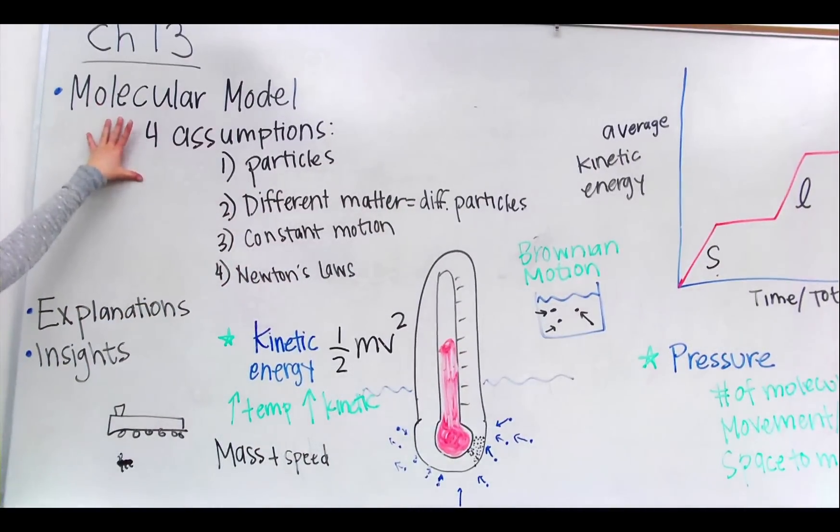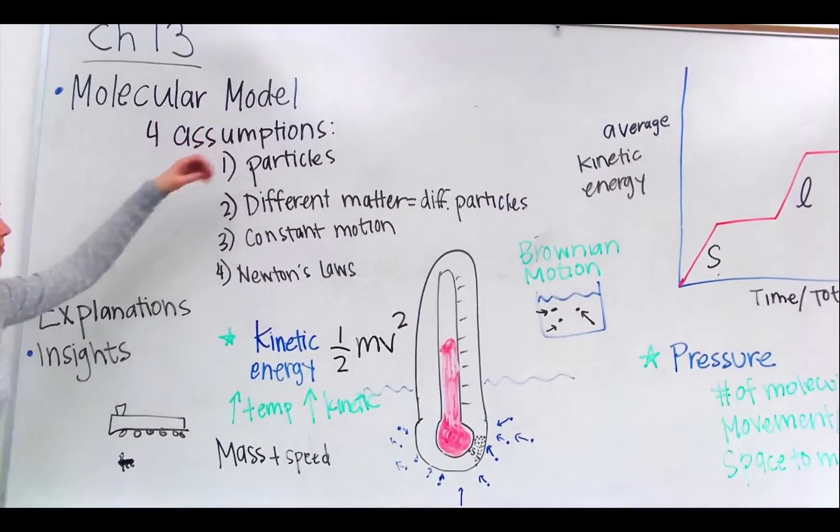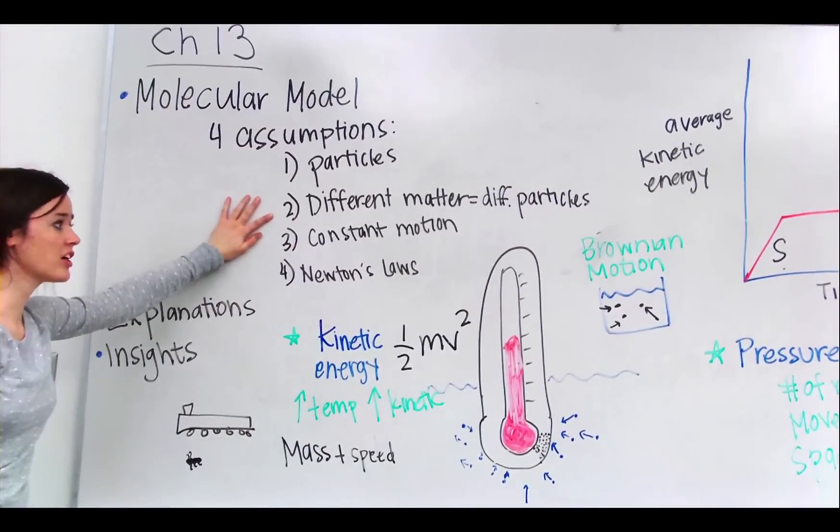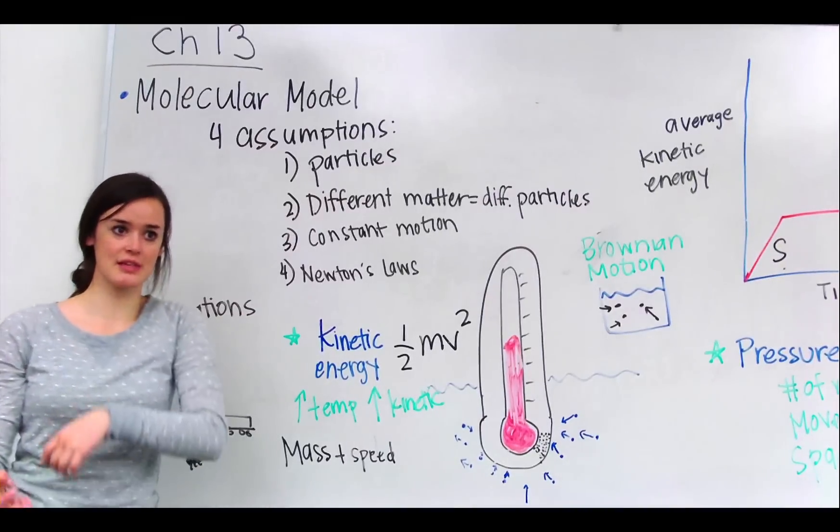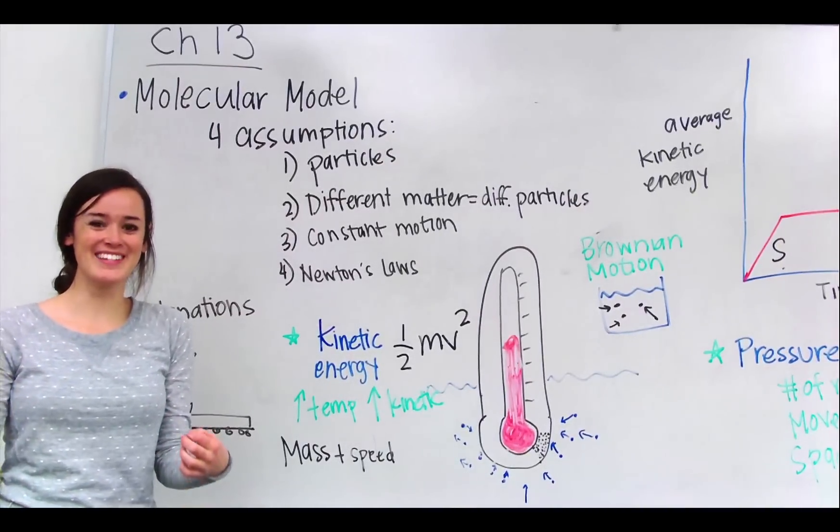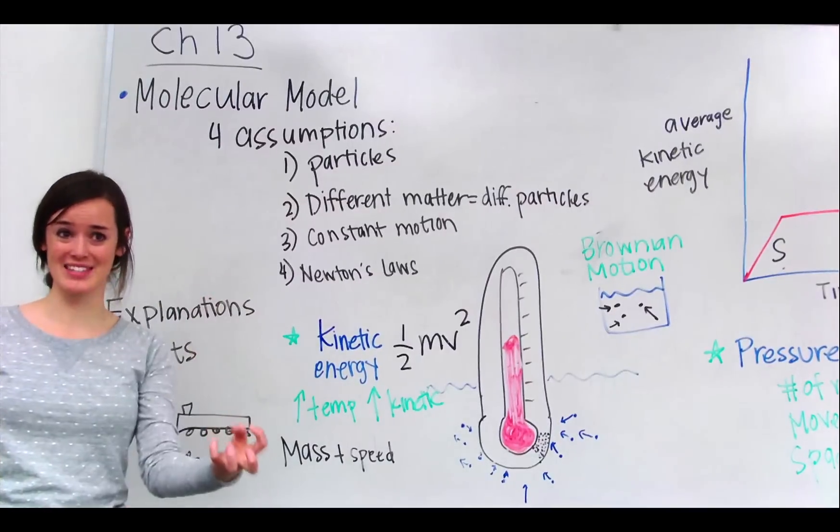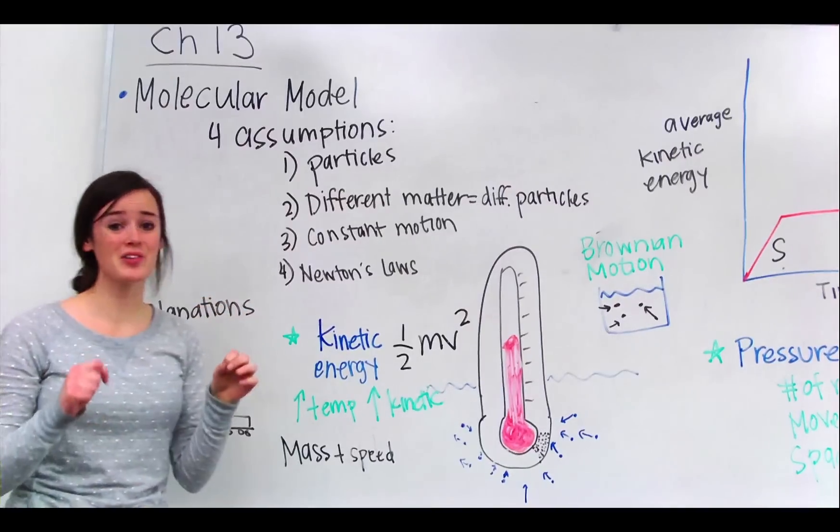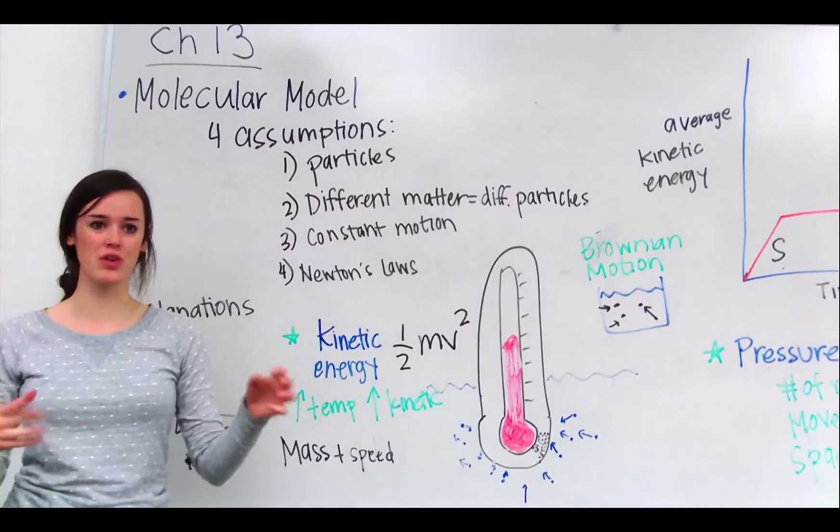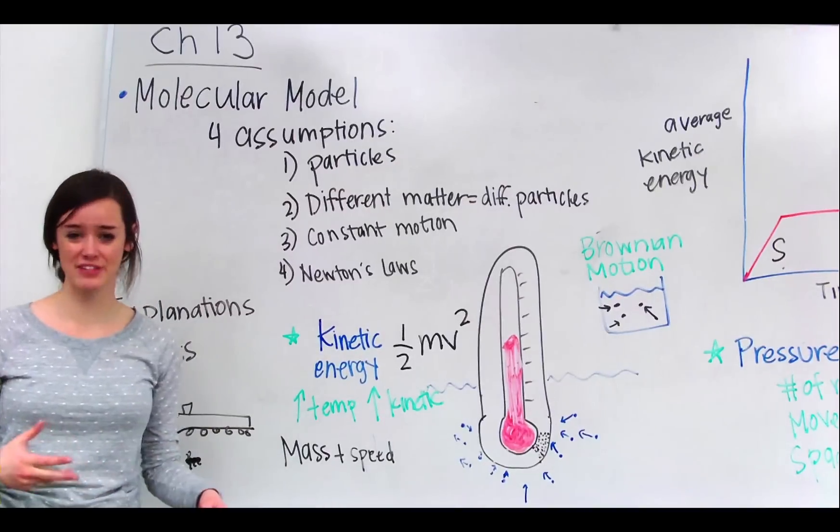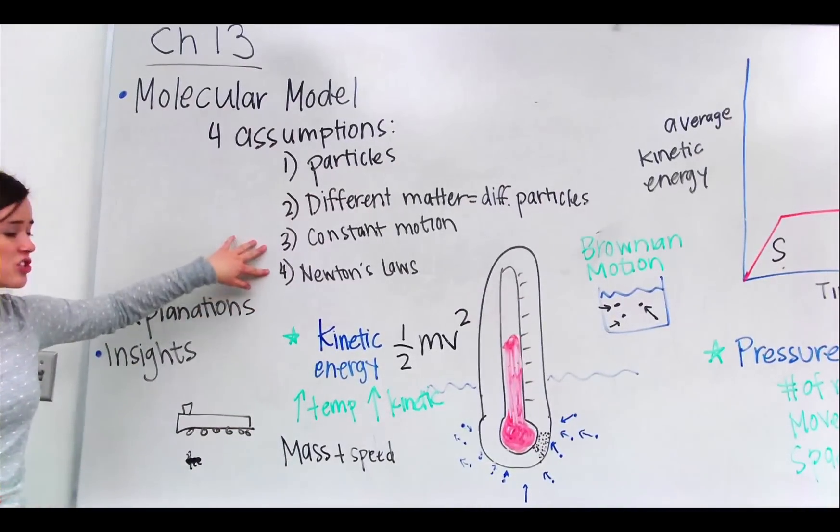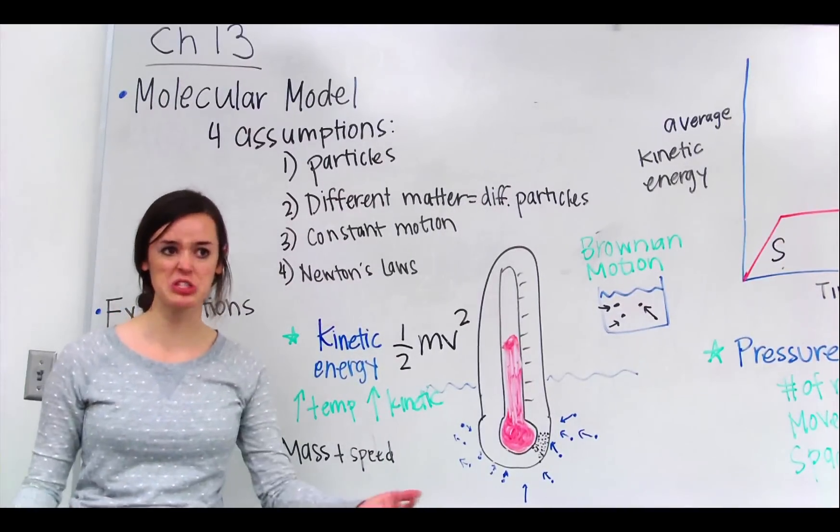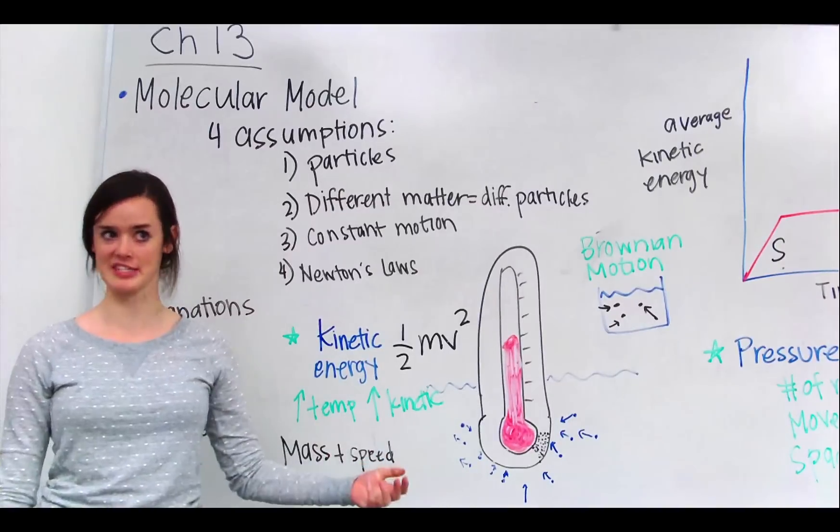So this molecular model has four assumptions to it. The first one is that all matter is made of particles. Two, different matter is made of different particles. If you have some wood versus some metal, the wood is going to be made of different particles as the metal is made of. Next is these particles are in constant motion. Depending on how fast they're moving or the way they're moving, they're going to have different properties to them. And the last one is Newton's Laws. So these particles have to obey Newton's Laws. They'll have acceleration, forces, things like that.